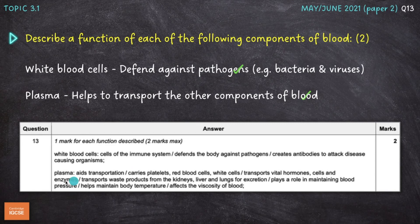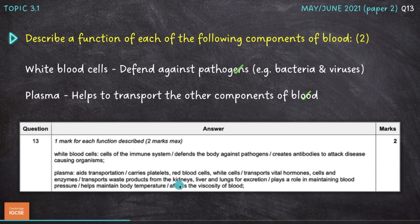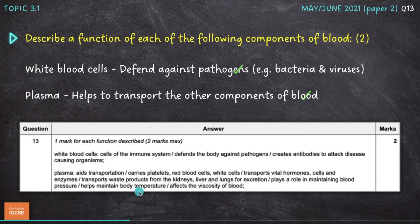The mark scheme says white blood cells are the cells of the immune system — they defend the body against pathogens and create antibodies to attack disease-causing organisms. Plasma aids transportation, carrying platelets, red blood cells, white blood cells, etc. It also transports enzymes and waste products like lactic acid and carbon dioxide from the kidneys, liver, and lungs for excretion. It also plays a role in maintaining blood pressure and body temperature, and affects the viscosity or thickness of the blood.